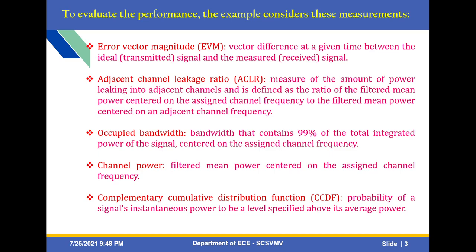What is error vector magnitude? It is the vector difference at a given time between the ideal transmitted signal versus the received signal. The next one is adjacent channel leakage ratio, shortly called ACLR. It is the measure of the amount of power leaking into an adjacent channel, defined as the ratio of filtered mean power centered on the assigned channel frequency to the filtered mean power centered at an adjacent channel frequency.